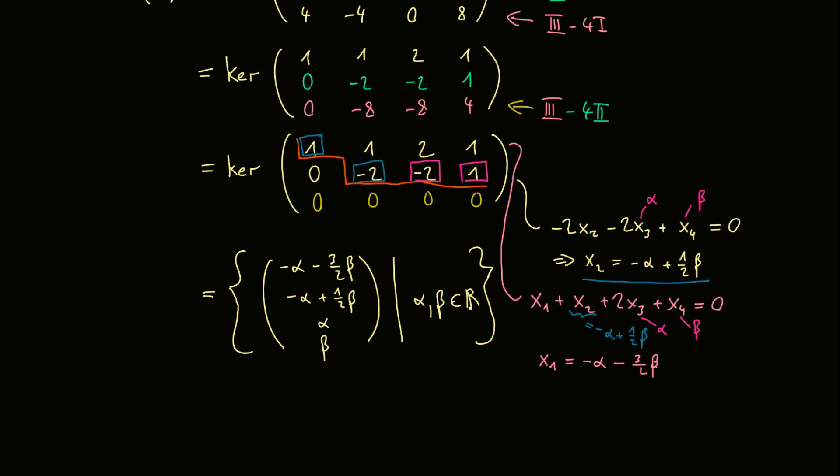So of course we can split this up in two vectors. So we use the alpha coefficient, then we have the vector minus 1, minus 1, 1 and 0, plus beta in the vector with coefficients in front of beta, so minus 3 half plus 1 half, 0 and 1. And the same again, we have to mention alpha and beta coming from the real numbers. So obviously this is the same set. So we just wrote the vector in another way, and this is the whole kernel.